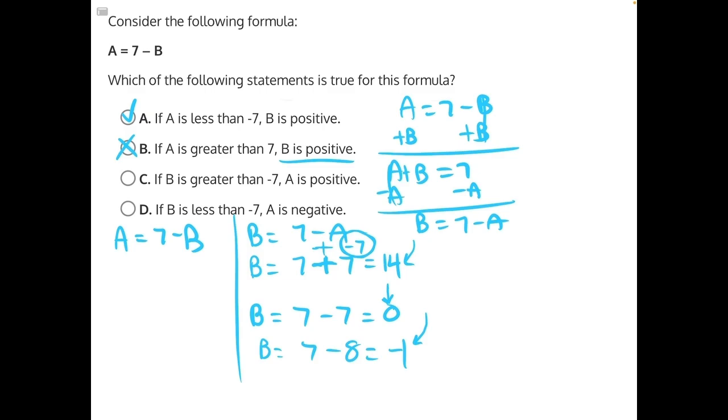For answer choice C, if B is greater than negative 7, A is positive. Well, let's plug that in. A is equal to 7 minus negative 7, which is equal to 0. Actually, this is 7 minus a negative, which would be the same thing as adding a positive, and that would give us 14.